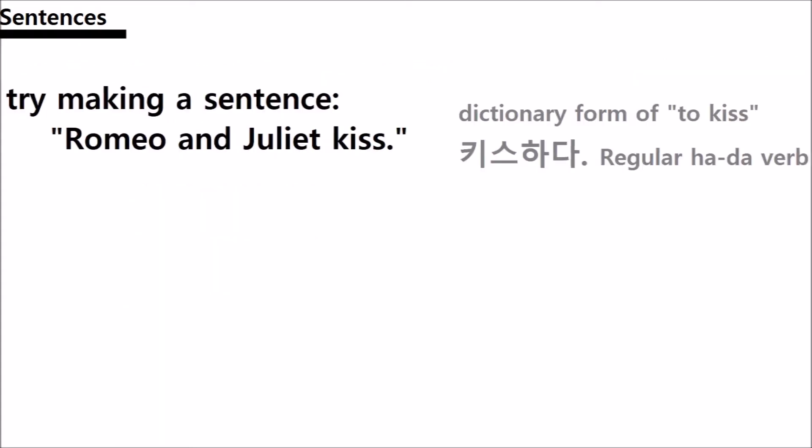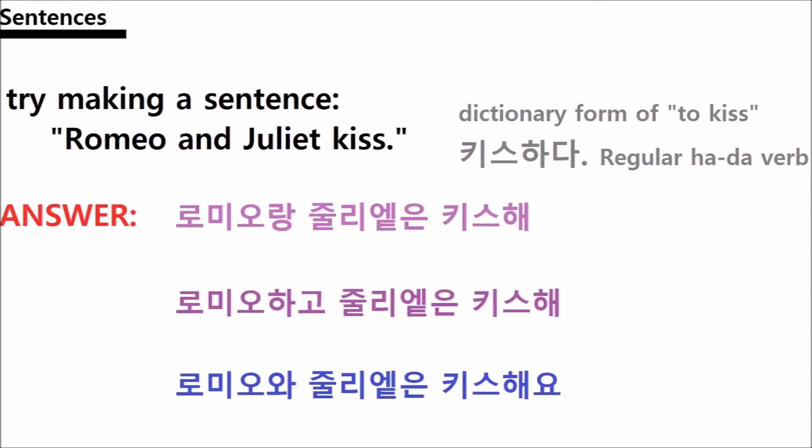Try an example for yourself. How do you say 'Romeo and Juliet kiss'? Here's the dictionary form of 'kiss' — it's a regular 하다 (hada) verb. Pause the video and figure it out. Here's the answer — don't cheat.